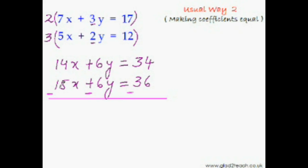Now 14x minus 15x would be minus x. Now plus 6y and minus 6y—they will cancel each other out. See, they get eliminated. And 34 minus 36 is minus 2.